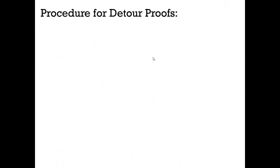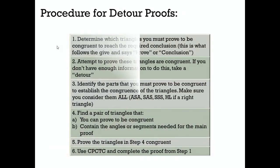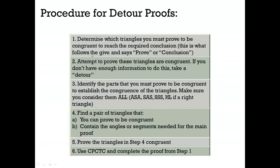There is a procedure for doing detour proofs. Step 1, determine which triangles you must prove to be congruent to reach a required conclusion. This is what follows the given, it should be and says prove or conclusion. You've seen both of those.